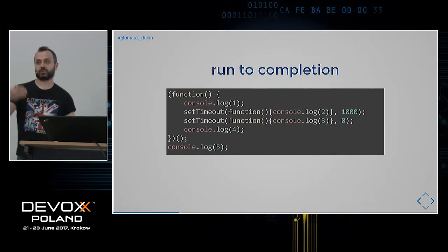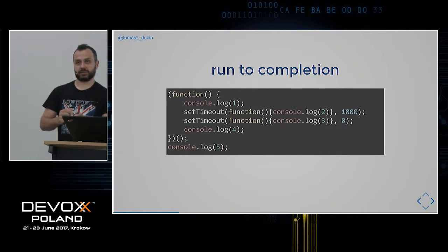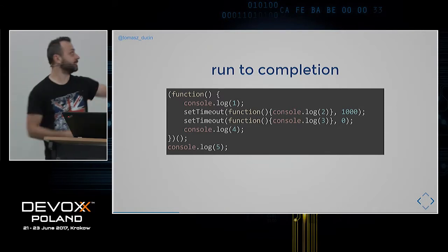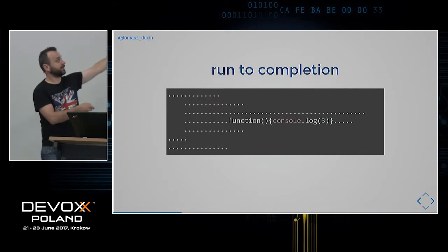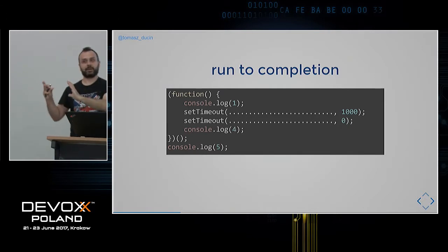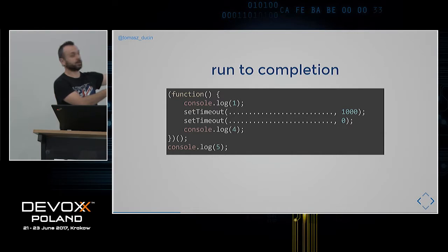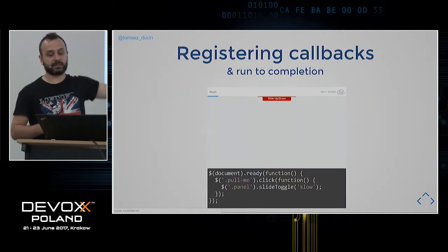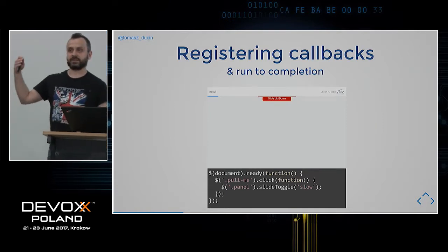This is called run-to-completion: once a synchronous piece of code has started, there is no way to interrupt it — it either finishes successfully or throws an error. The first message is done and thrown out. The event loop then picks up the second message: in the Web API, the 1000ms timer fires first and is placed on the queue first, so console.log 3 executes, then console.log 2.